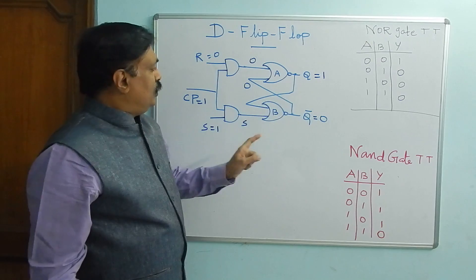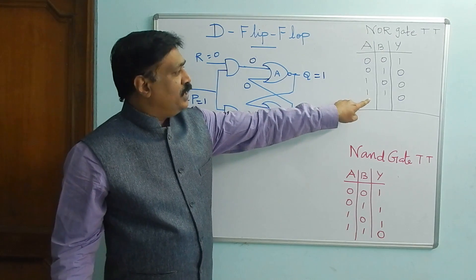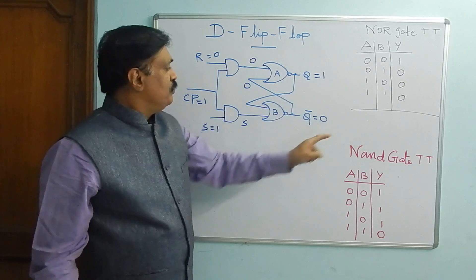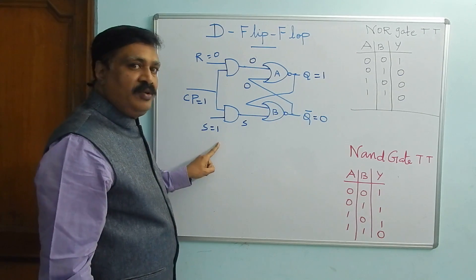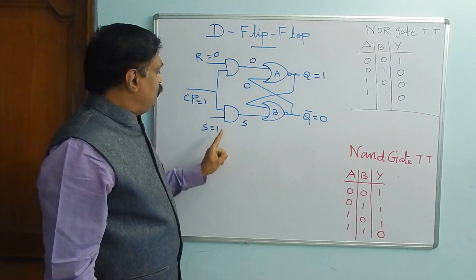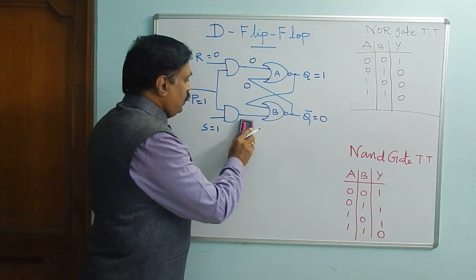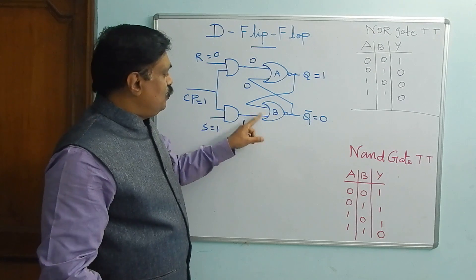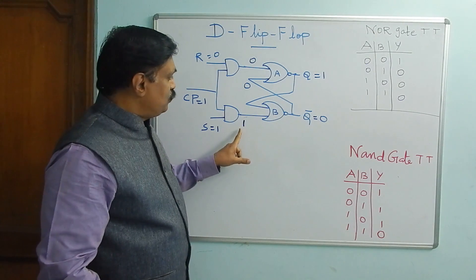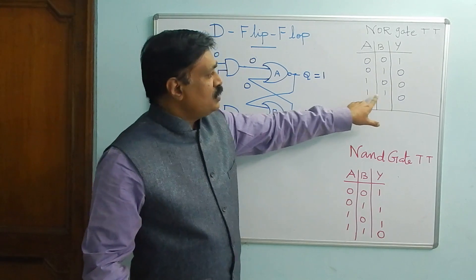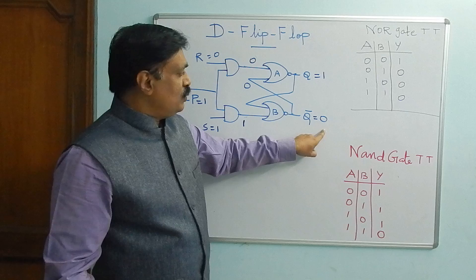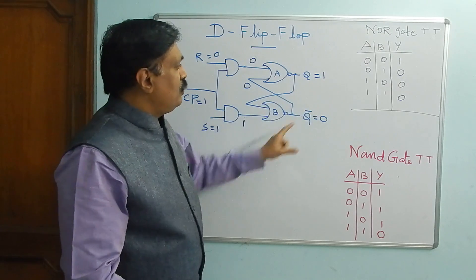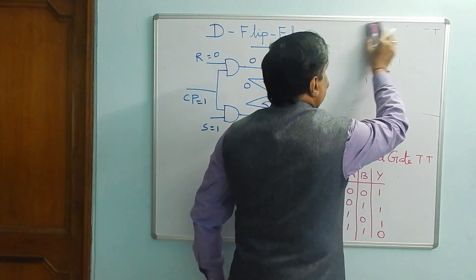Both inputs are 0 means Q equal to 1. Now I am going to erase this truth table and prepare the SR flip-flop table. When S equal to 1 and R equal to 0, the AND gate produces 1 here. Due to both inputs being 1, and since any one input is 1, the corresponding NOR gate output is 0. This 0 goes here, and since both inputs are 0, the output is 1. Now I will draw the SR flip-flop.